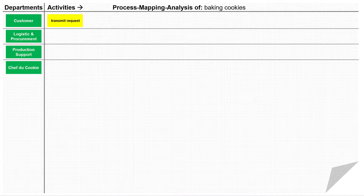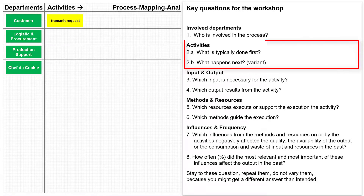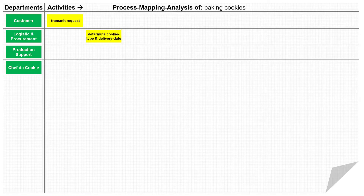To really understand the process it is important to describe the activities as consciously and precisely as possible. This is not always easy, and sometimes several attempts are needed to really describe what happens — but it is a good exercise for learning to see. To continue the process mapping I ask a variant of the second question: what happens next? And I write the answer, determine cookie type and delivery date, on a sticker. This is the first activity of the department logistics and procurement, and I put the sticker in the corresponding swim lane to the right of the first activity and below the first swim lane.